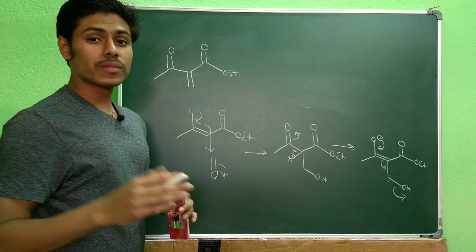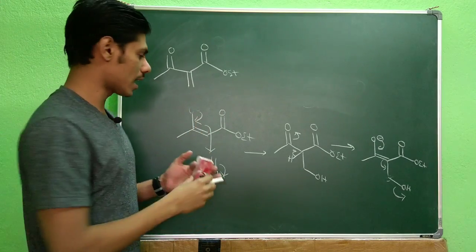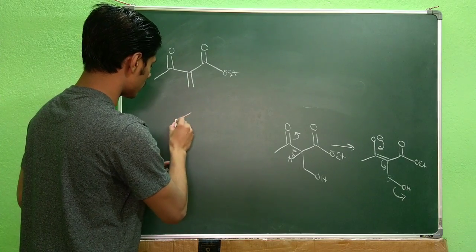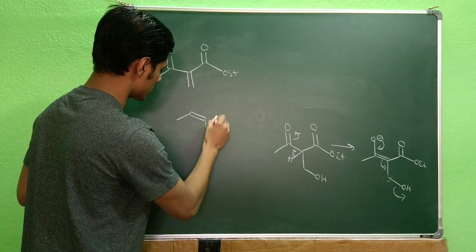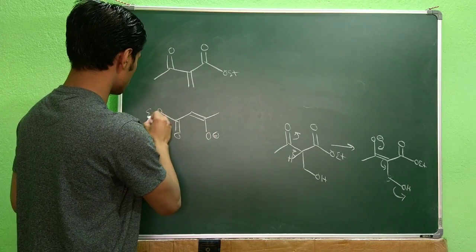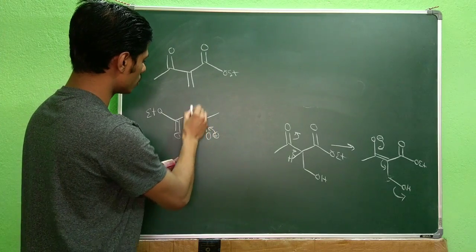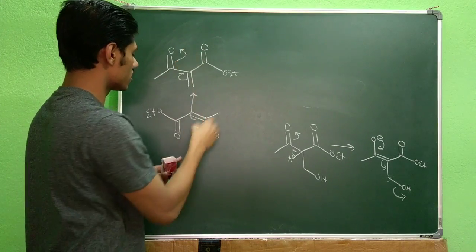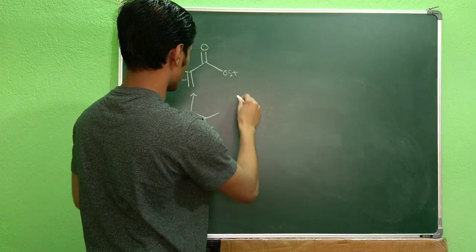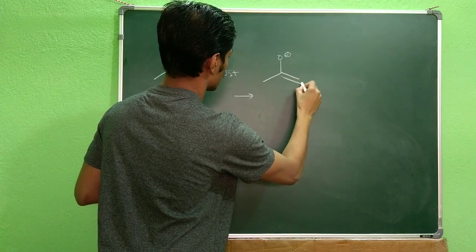Here is the importance of the second equivalent of ethyl acetoacetate. The second ethyl acetoacetate can form another enolate in the same way. So the second ethyl acetoacetate enolate can now do a Michael addition onto the alkene product.